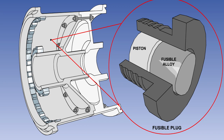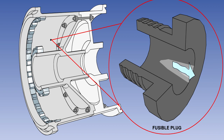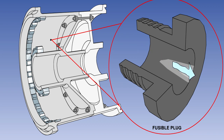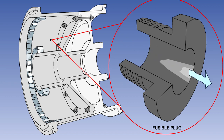These plugs are screwed into holes in the wheel rim. They are sealed by a piston which is held in position in the plug by a fusible alloy. Under excessive heat conditions, the alloy melts, allowing the piston to escape. This causes the tyre to deflate in a controlled manner. The important points to remember are that fusible plugs are fitted in the wheel rim and they protect the tyres from explosion due to overheating, by releasing the gas in a controlled manner if an excessive temperature is reached.